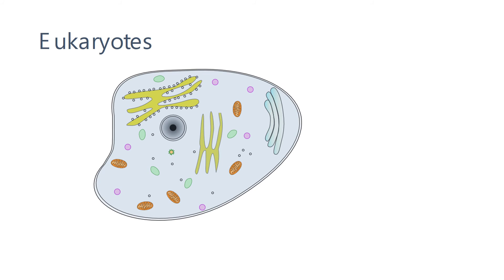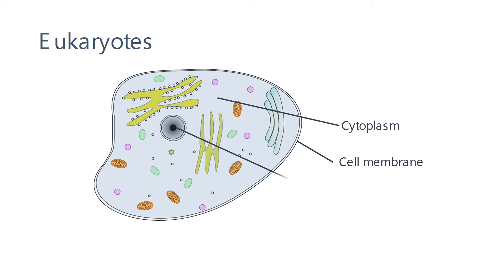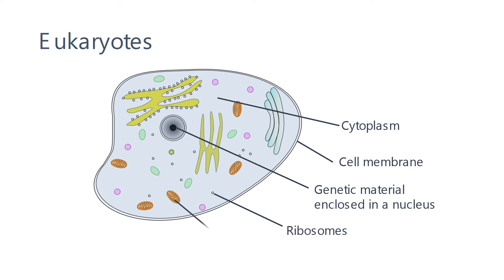A eukaryotic cell in comparison will also have cytoplasm and a cell membrane; however, the genetic material is contained in the nucleus. It also has ribosomes and it may have mitochondria.